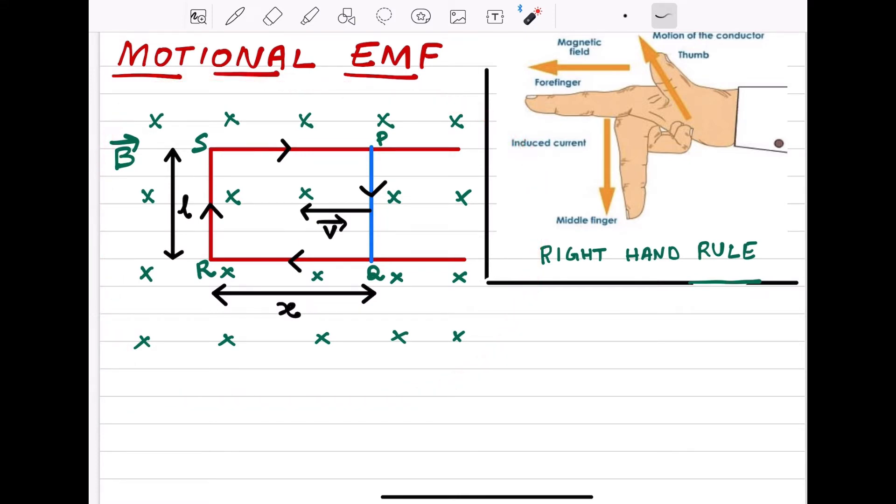Now what is the flux linked with the loop? Flux linked with the loop is given by phi is equal to B into A. So what is the area? Area is equal to length into breadth. So B into, length is L, breadth is X. See, length is L, breadth is X.